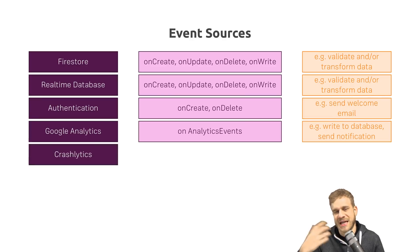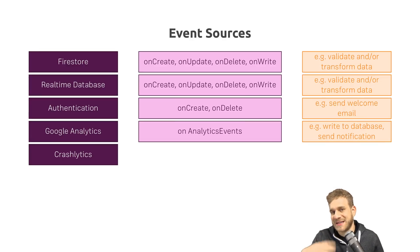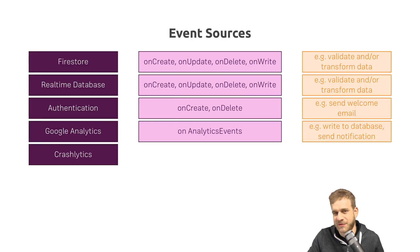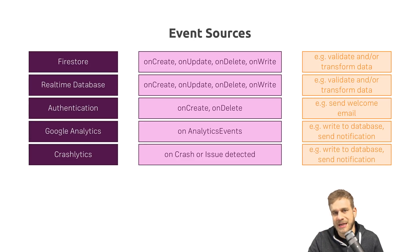We also have Crashlytics, another service offered by Firebase. This is mostly relevant to mobile apps — Android and iOS — where you embed the Firebase SDK and report crashes through the internet to your backend, giving you a live update of crashes without waiting for customer reviews. You can listen to crashes or issues detected and run code — for example, write extra data to the database or send yourself a notification saying there has been another crash of this type.